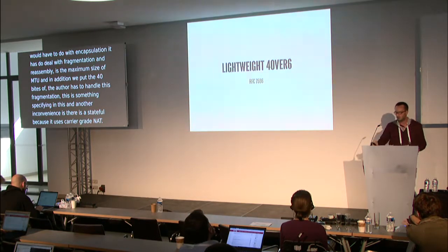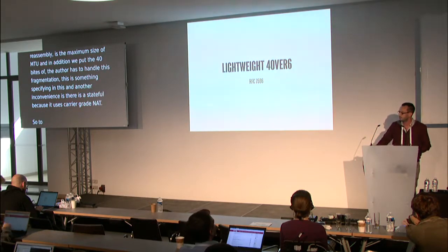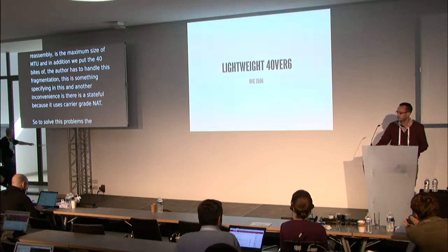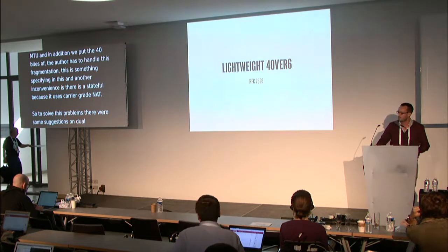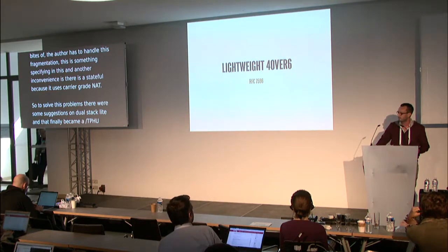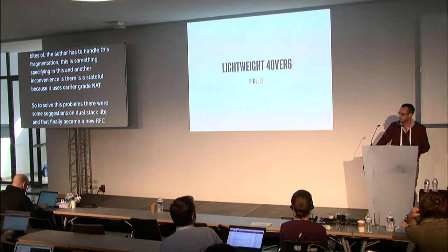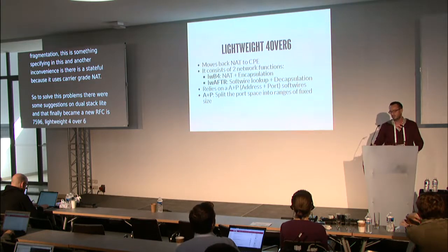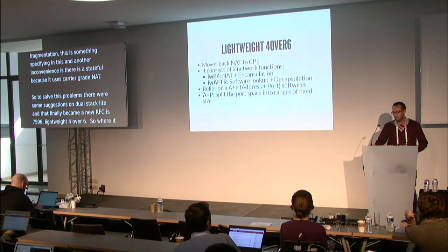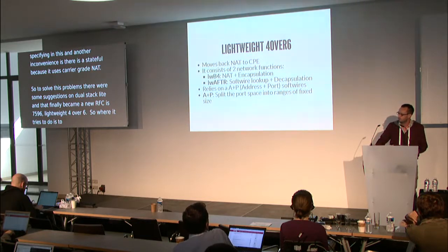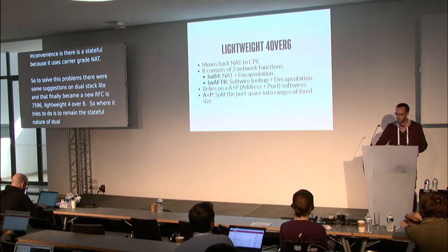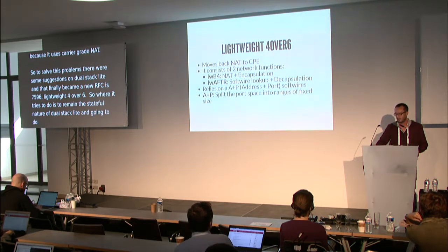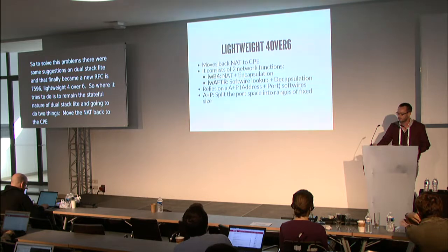To solve these problems, there were suggestions on dual stack lite that finally became a new RFC — RFC 7596 — called Lightweight 4 over 6. What Lightweight 4 over 6 tries to do is remove the stateful nature of dual stack lite. For doing that it does two things: it moves the NAT back to the CPE, and as with dual stack lite, it relies on two network functions.